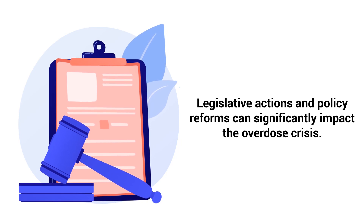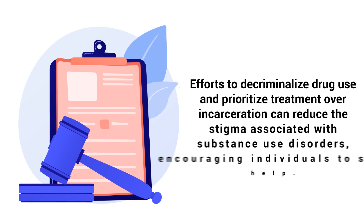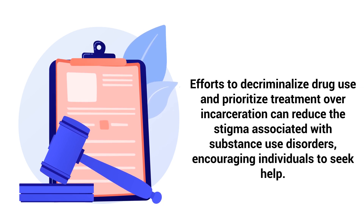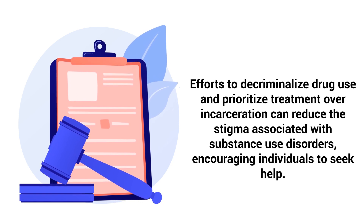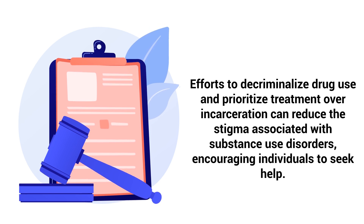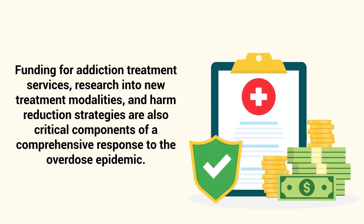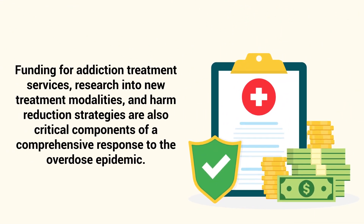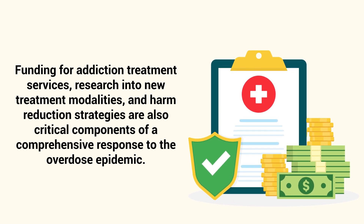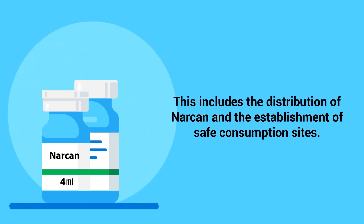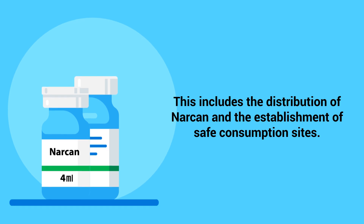Legislative actions and policy reforms can significantly impact the overdose crisis. Efforts to decriminalize drug use and prioritize treatment over incarceration can reduce the stigma associated with substance use disorders, encouraging individuals to seek help. Funding for addiction treatment services, research into new treatment modalities, and harm reduction strategies are also critical components of a comprehensive response to the overdose epidemic, including the distribution of Narcan and the establishment of safe consumption sites.